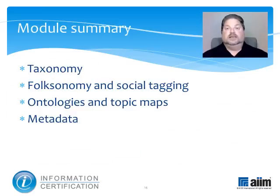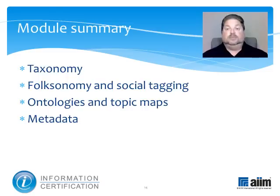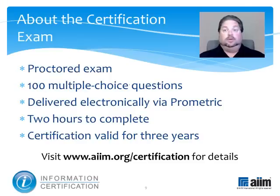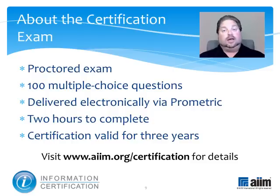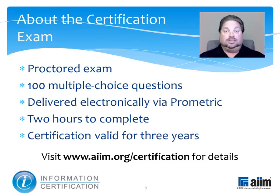This module has discussed some primary content organization and classification structures, including taxonomy, folksonomy and social tagging, ontologies and topic maps, and metadata. Having completed it, you may next wish to review the module on information relationship building and automation. The material you have just reviewed is part of a broader program of study that prepares you to take the information certification exam. This proctored test consists of 100 multiple choice questions and is delivered electronically by Prometric. You'll have two hours to complete it, and upon passing, you'll earn a professional certification that's valid for three years. For more information, please visit www.aim.org/certification. Thank you.